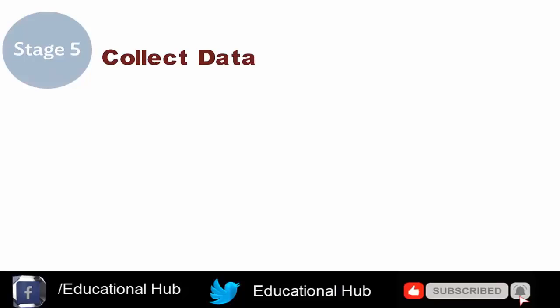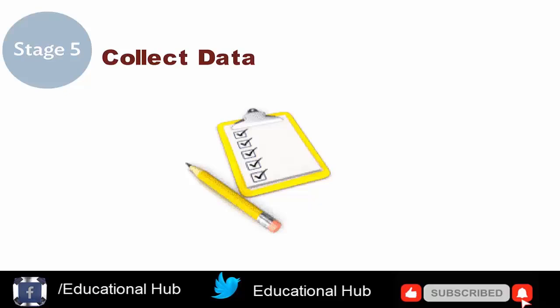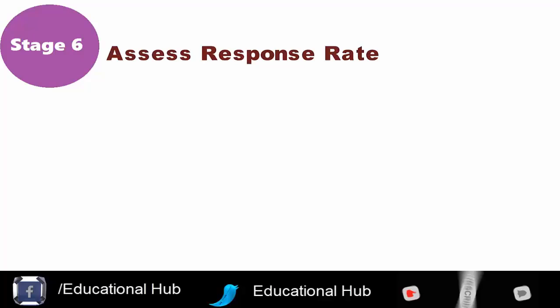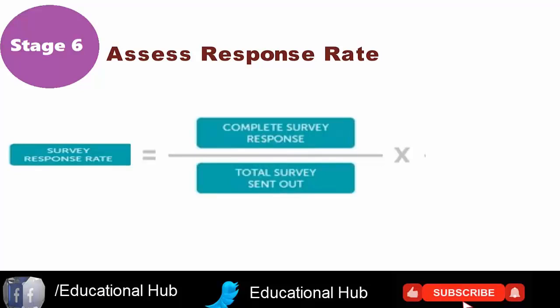The next step is to collect data. Stage 6: Assess response rate. Response rate is the number of cases agreeing to take part in the study, taken from the original sample. In reality, most researchers never achieve a 100% response rate. Reasons for this might include refusal to respond.